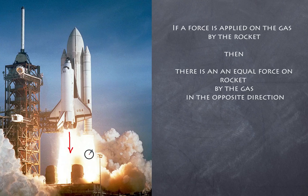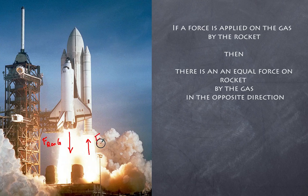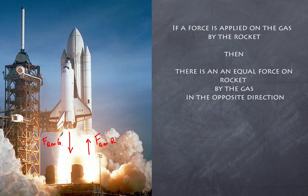What about a rocket? We have two forces here: a force going downward and a force going upward. The force of the rocket onto the gases pushes the gases down. Therefore, the gases apply a force on the rocket upward — that's what causes the rocket to go up. One force acts on the gases, and the other acts on the rocket.